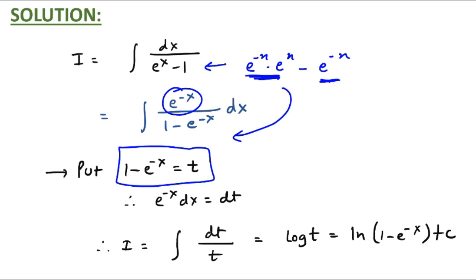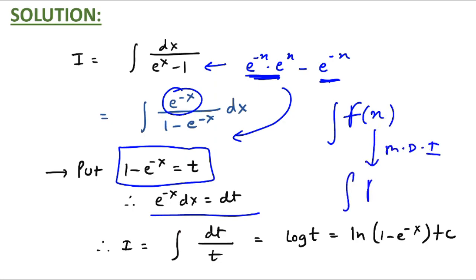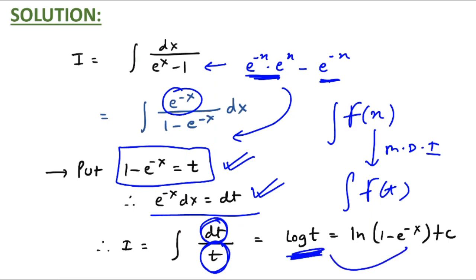Differentiating both sides, e raised to minus x dx equals dt. Everything is changed — your original integral in terms of x is now a modified integration in terms of t. The denominator is changed to t and the numerator is changed to dt. With 1 minus e raised to minus x equal to t and e raised to minus x dx equal to dt, the final answer is log t. Doing the reverse substitution, the answer is log of (1 minus e raised to minus x) plus c.